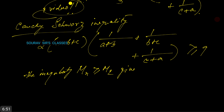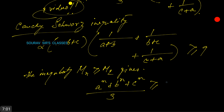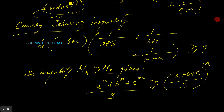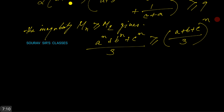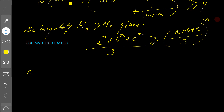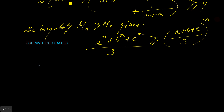From the power mean inequality, we have: (aⁿ + bⁿ + cⁿ)/3 ≥ ((a+b+c)/3)ⁿ.